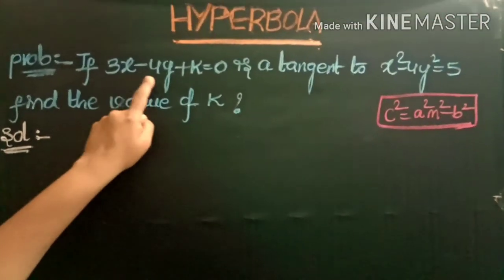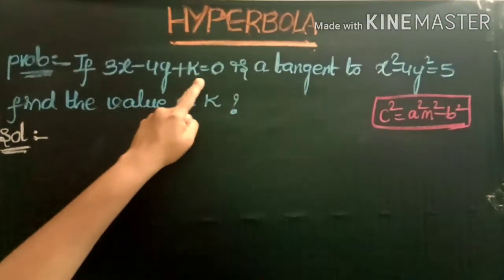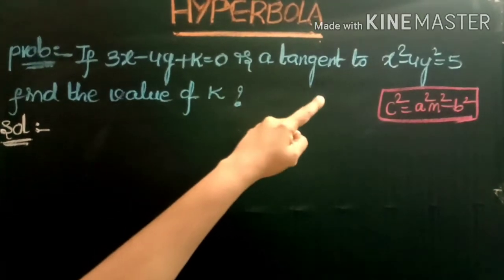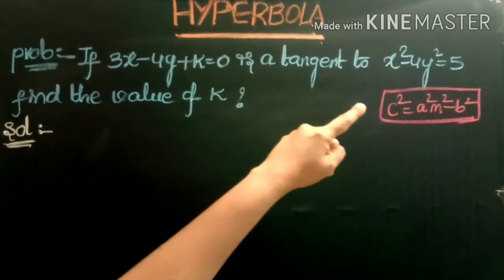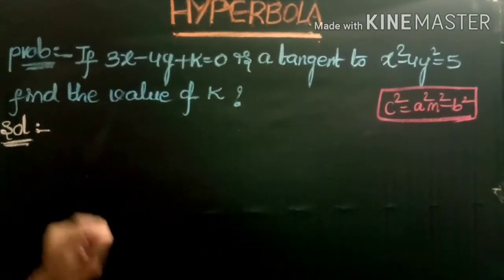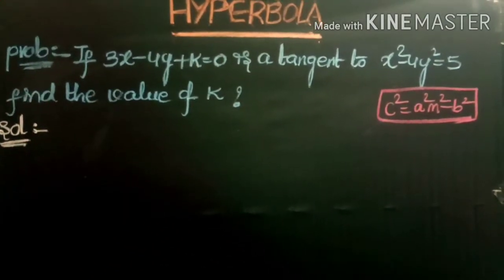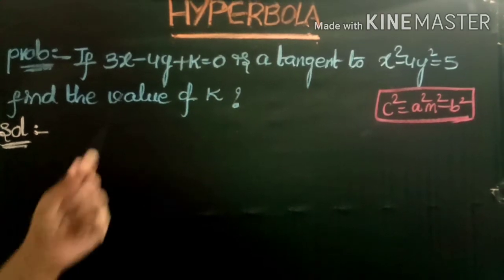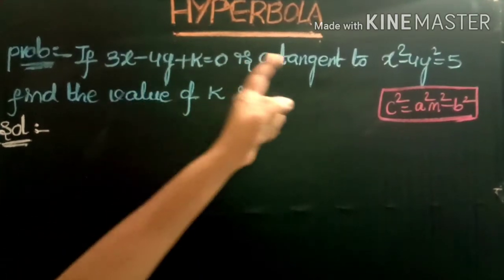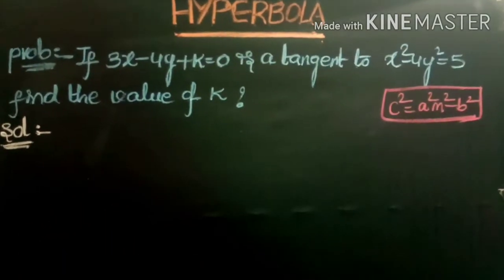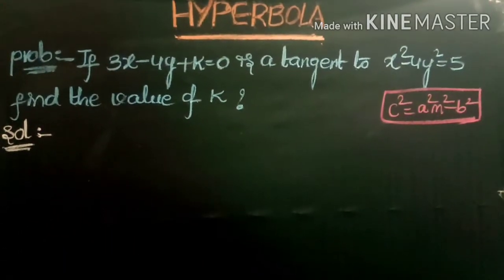If 3x minus 4y plus k equals 0 is a tangent to x squared minus 4y squared equals 5, then find the value of k. Given that it is a tangent to the hyperbola x squared minus 4y squared equals 5.